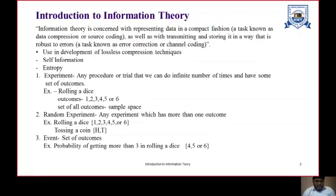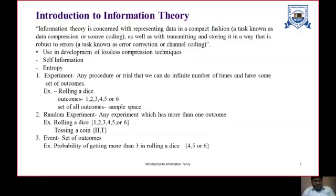The second term is random experiment. Any experiment which has more than one outcome — like when we roll a dice, there are many outcomes from one to six, and when we toss a coin, we have two outcomes, either head or tail — is called a random experiment. So rolling a dice can have more than one outcome, and we can say it is a random experiment.